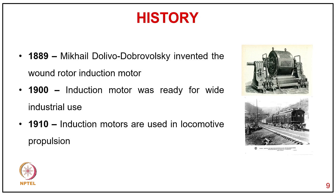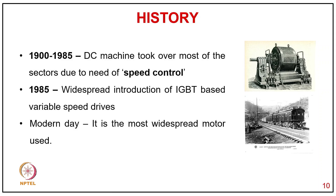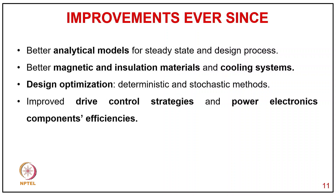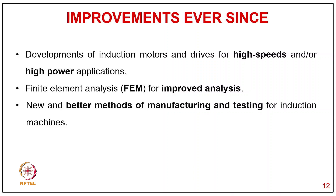From 1900 to 1985, DC machines took over most sectors due to the need for speed control. In 1985, the widespread adoption of IGBT-based variable speed drives made the induction motor the most widespread motor in most applications. Improvements over time include better analytical models for steady-state and design, better magnetic and insulation materials, cooling systems, design optimization using deterministic and stochastic methods, improved drive control strategies, power electronics, finite element analysis, and better manufacturing and testing methods.